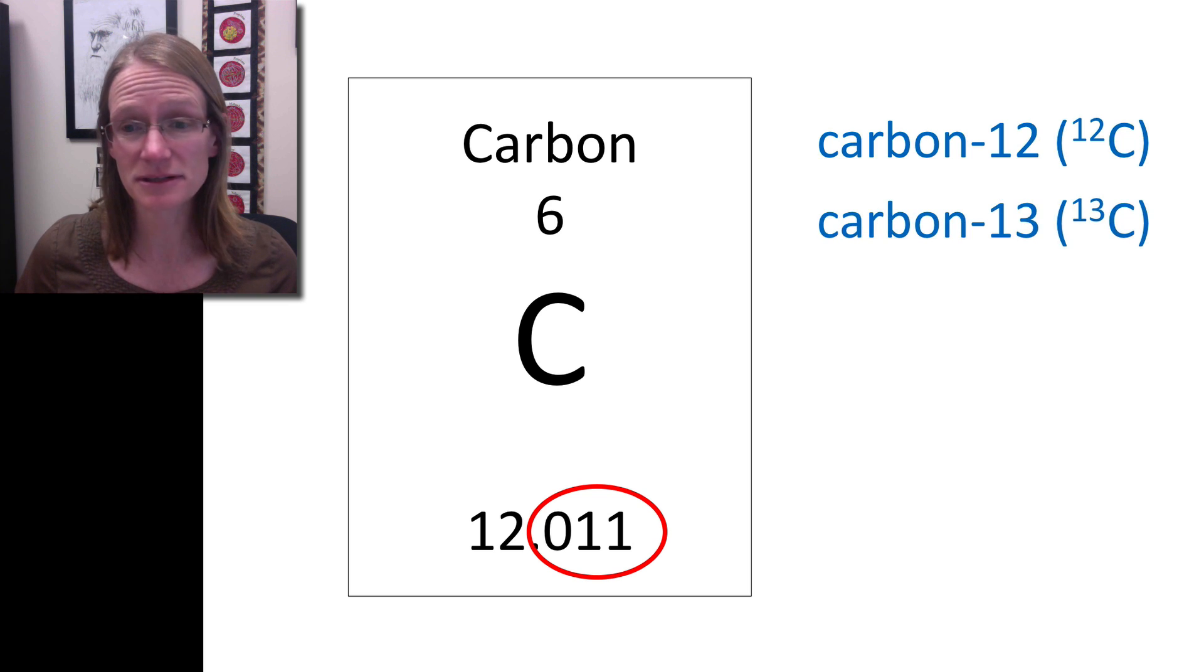That would be this example: carbon-12 is a normal one we would have, but carbon-13 would be that example of something having an extra neutron, making it a little bit heavier. It's different than the normal carbon-12 that has six protons, six neutrons, and six electrons, whereas carbon-13 has that extra neutron to make it a little bit heavier.